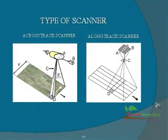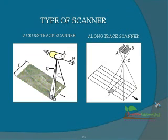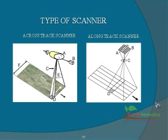Across-track scanners scan the Earth in a series of lines oriented perpendicular to the direction of motion of the sensor platform, i.e., across the swath. Along-track scanners also use the forward motion of the platform to record successive scan lines and build up a two-dimensional image perpendicular to the flight direction.